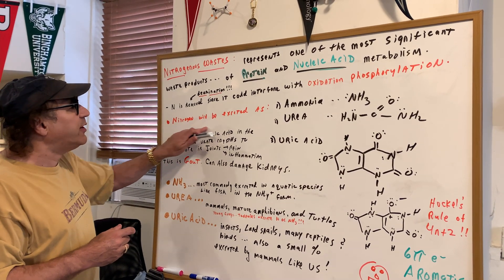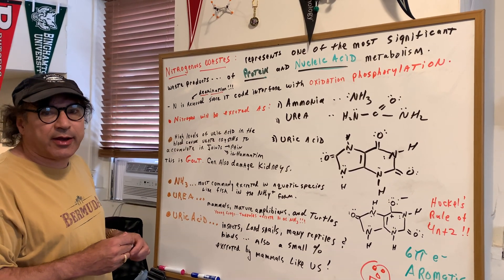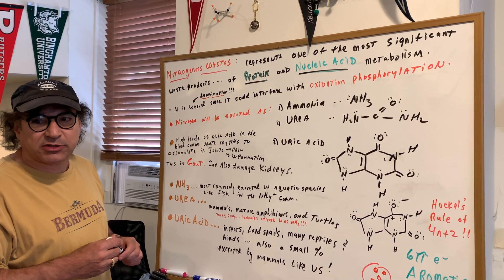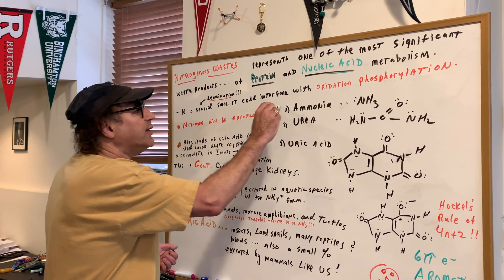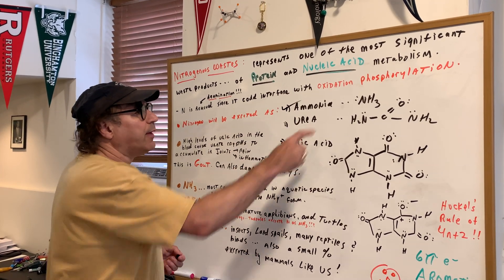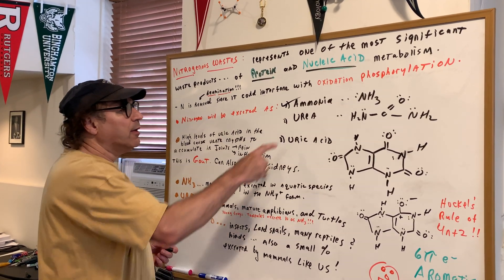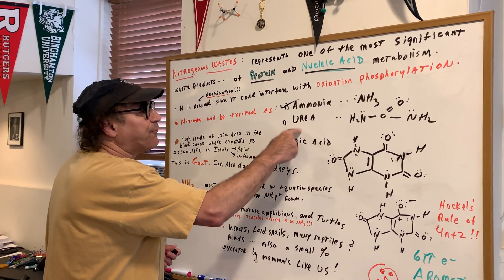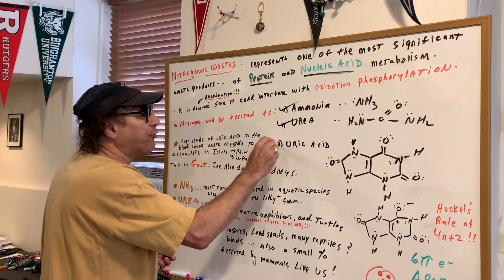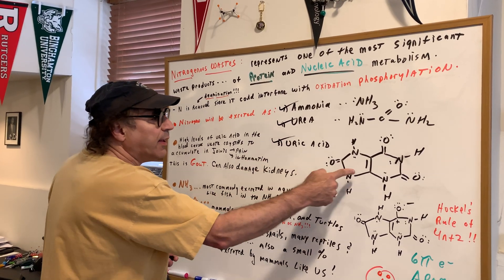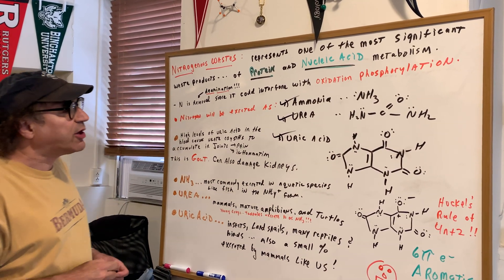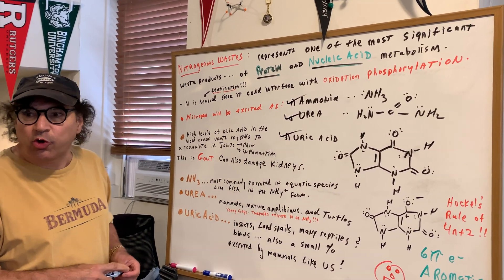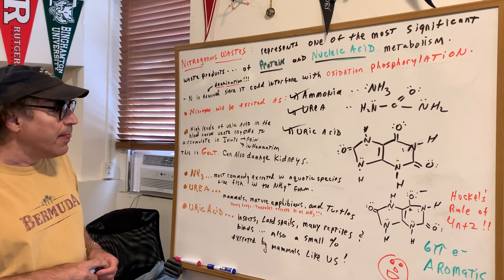Nitrogen is going to be excreted in three main forms. One is ammonia, NH3. The second form is urea. And the third form is this crazy-looking structure called uric acid.